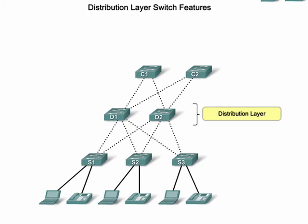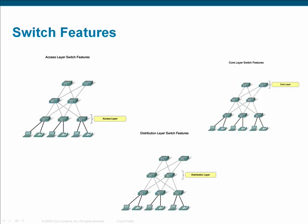When choosing distribution layer switches, fast forwarding rates become increasingly important because those switches aggregate traffic from multiple access layer switches. Port density is not as important at the distribution layer as it is at the access layer. Layer 3 switching and link aggregation capability should also be considered at the distribution layer. If quality of service and VLANs have been implemented at the access layer, they should be continued in the distribution layer.